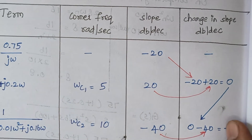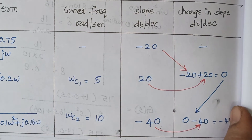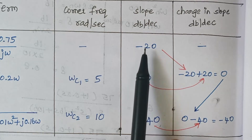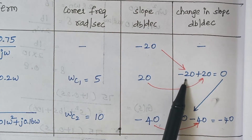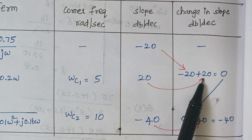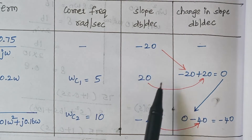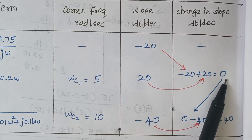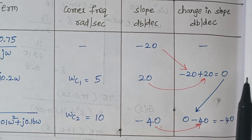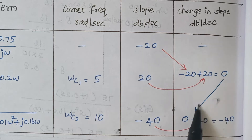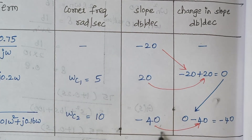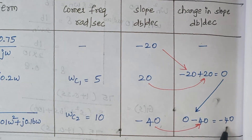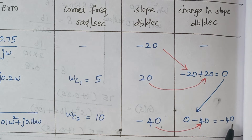To find the change in slope: start with −20 and move the slope to the right — minus 20 plus 20 gives 0. Then move this result downward and shift the next slope to the right: 0 minus 40 gives −40. So the change in slope column reads −20, 0, and −40.